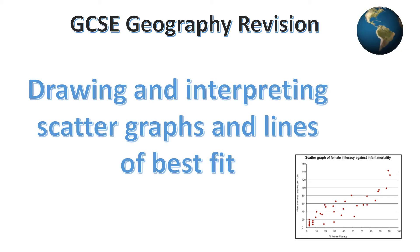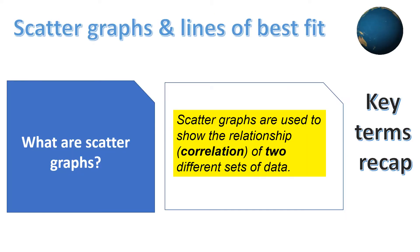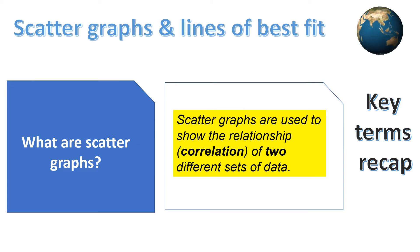This show is to help ensure that you can produce and interpret scatter graphs in geography. We will also learn how to draw a line of best fit to show strong correlation between the data. Scatter graphs are used to help show the relationship between two different sets of data. These graphs are shown with either a dot or cross placed at the point where the two sets of data meet.